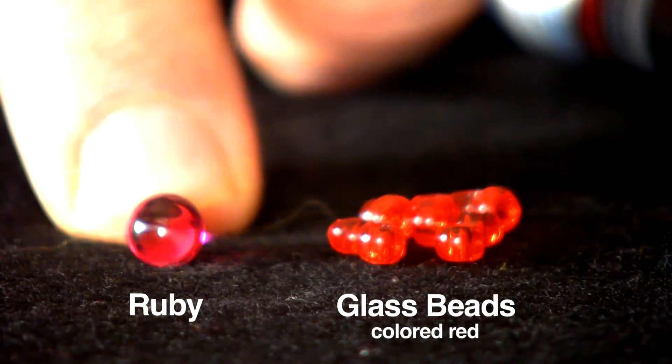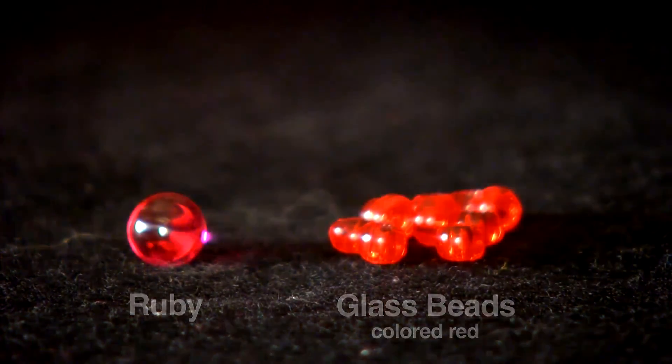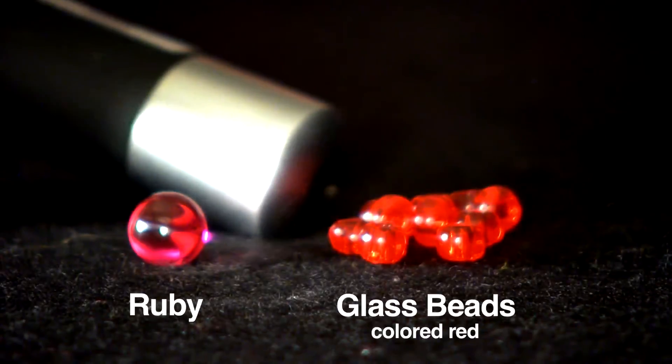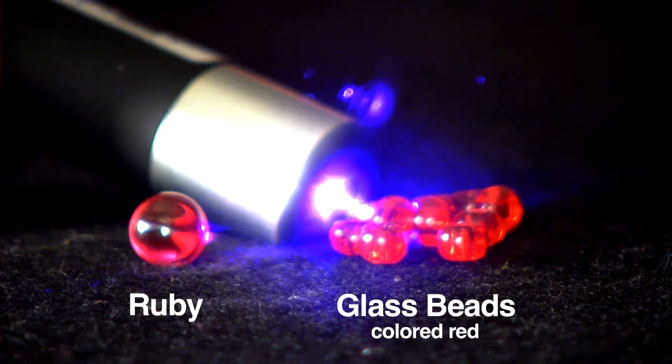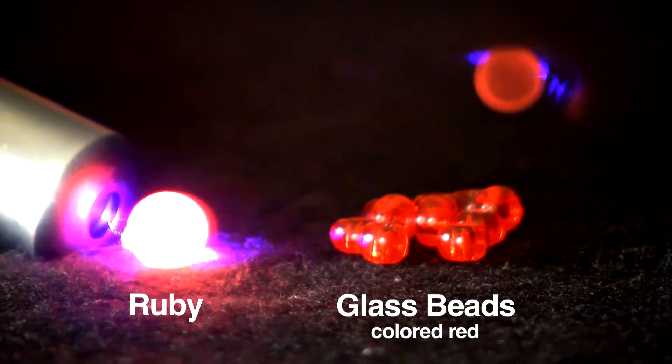Here I have a tiny piece of ruby and some red colored glass beads. When I shine the blue light on the glass beads, nothing much happens, but shine it on the ruby and it glows red. Unlike the glow-in-the-dark ball, the light appears immediately and when I shut off the blue light, it disappears.